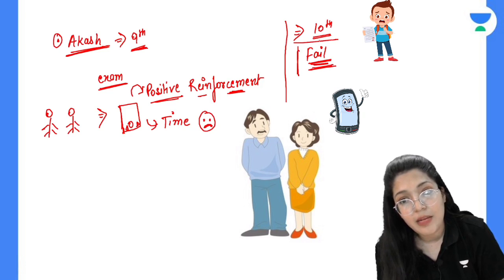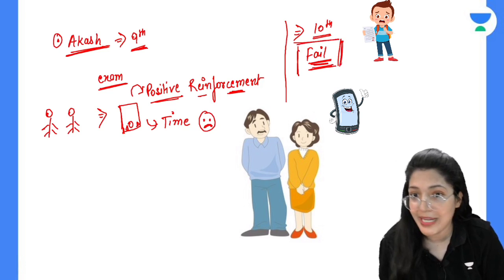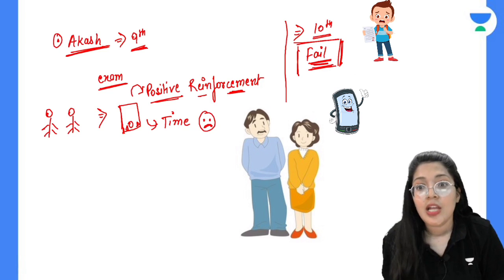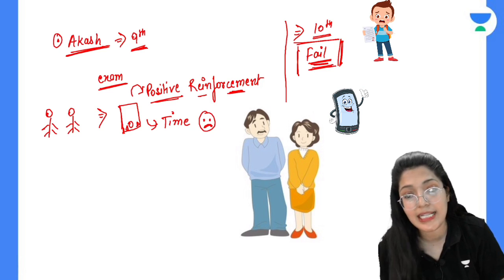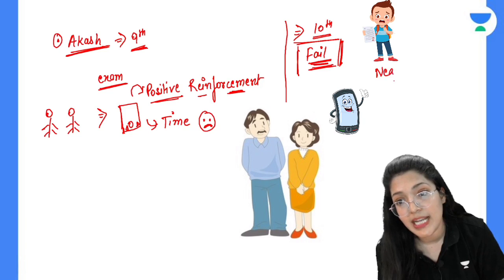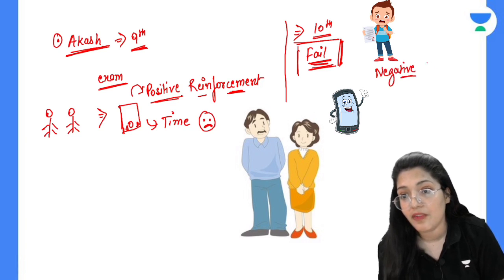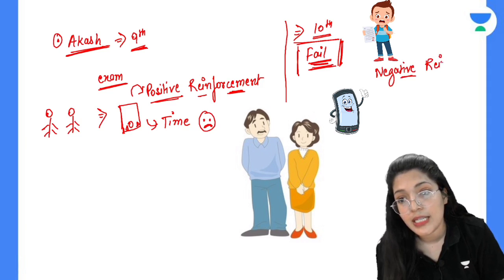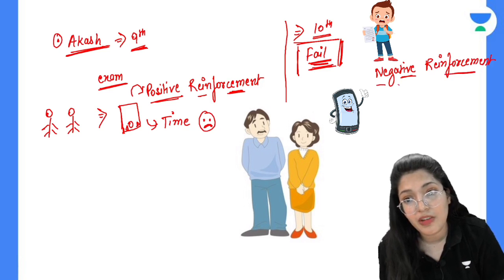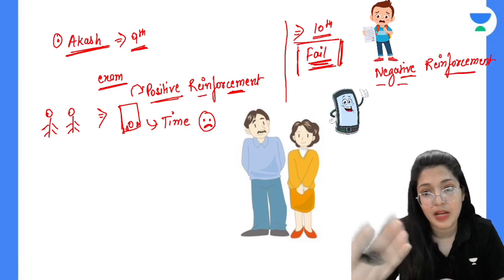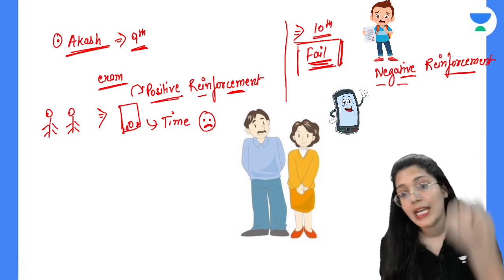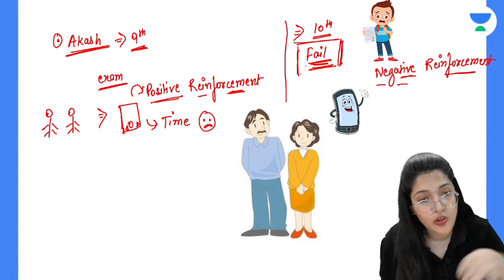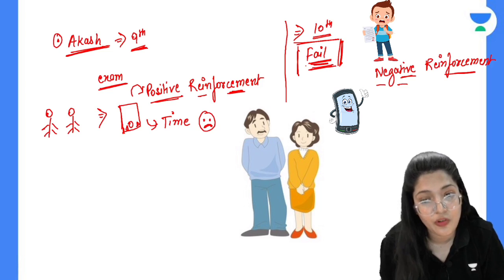Subconsciously, Aakash now understands that whenever he does wrong behavior — behavior that is not expected of him — something bad will happen to him too. In other words, negative reinforcement is being applied to him so that his wrong behavior is not repeated in the future. That is why his most precious thing — the phone — was taken away. This will make Aakash work twice as hard to get his phone back.